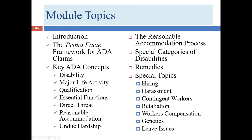We talked about the prima facie case and how it's similar to and different from the Title VII model. Then we went through some key ADA concepts: disability, major life activity, qualification or otherwise qualified, essential functions, direct threat, reasonable accommodation, and undue hardship. We're going to drill down into more detail, especially with these last two concepts in our next section, which we're calling the reasonable accommodation process. Then we'll segue to remedies.